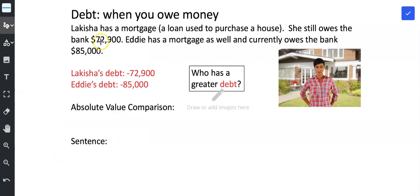All right, let's look at our next example. In our next example, we're talking about debt. Debt is when you owe money. So in this example, it says Lakeisha has a mortgage. A mortgage, you need to understand, is a loan used to purchase a home.